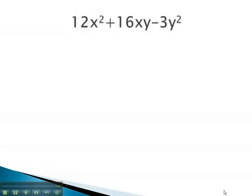We will now look at factoring this problem. Here, we have 12x squared plus 16xy minus 3y squared. Again, we will use the AC method to help us factor it.